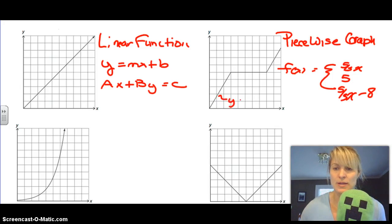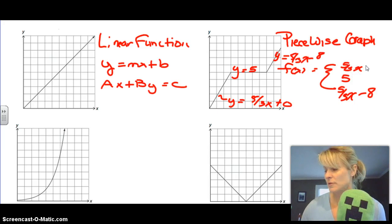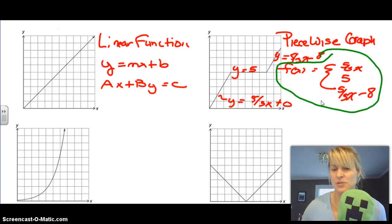Basically, because there's three pieces, a piecewise graph will have three equations for each part. So this part was y equals 5 thirds x, or you could put plus zero. This piece right here is y equals 5. And then this piece right here was y equals 5 thirds x minus 8. You'll see them all put together as one with the f of x or the y equals out here, and then the three lined up. These will change depending on whatever the graph is, and depending how many pieces there are, that's how many equations you'll have.